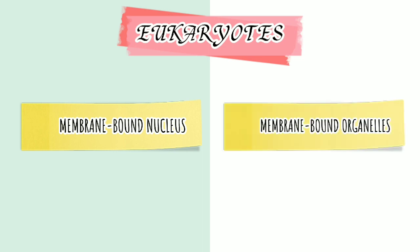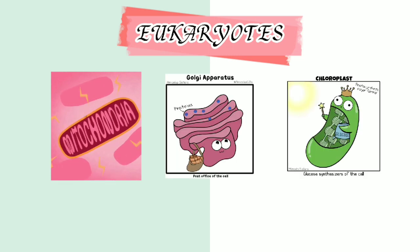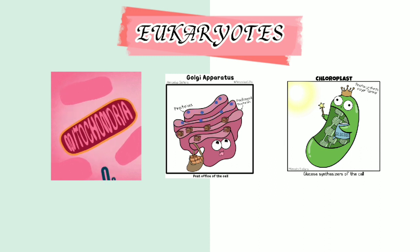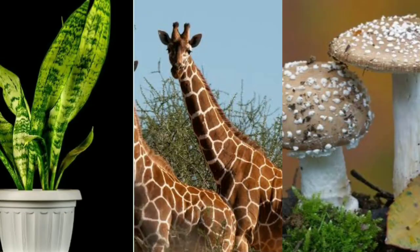Eukaryotes are organisms with cells that contain a membrane-bound nucleus and other membrane-bound organelles. The nucleus of a eukaryotic cell contains the genetic material, which is the DNA, and it is enclosed by a nuclear envelope. Other membrane-bound organelles include mitochondria, Golgi apparatus, and chloroplasts, which are found in photosynthetic organisms such as algae and plants. There are also unicellular eukaryotes known as protozoa. All other eukaryotes are multicellular organisms such as plants, animals, and fungi.